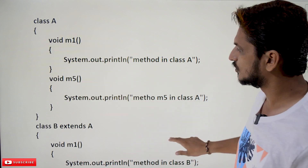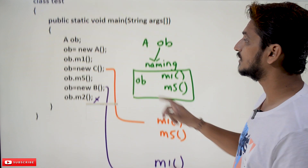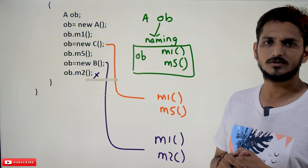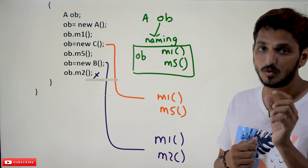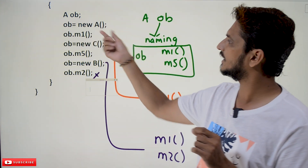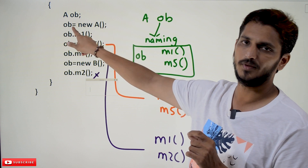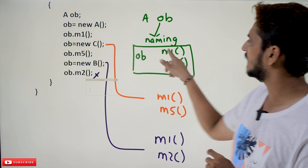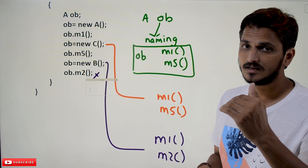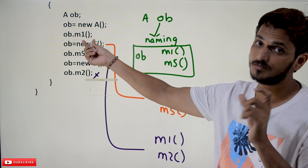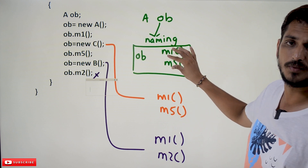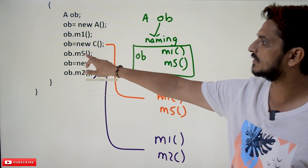The naming is assigned when the reference variable is created. So OB has a naming of M1 and M5. Now OB = new A() assigns a class A object to OB — OB can call both M1 and M5. When OB = new C(), a class C object is assigned to OB. Class C has M1 and M5 methods, which match the naming of OB, so both M1 and M5 can be called.